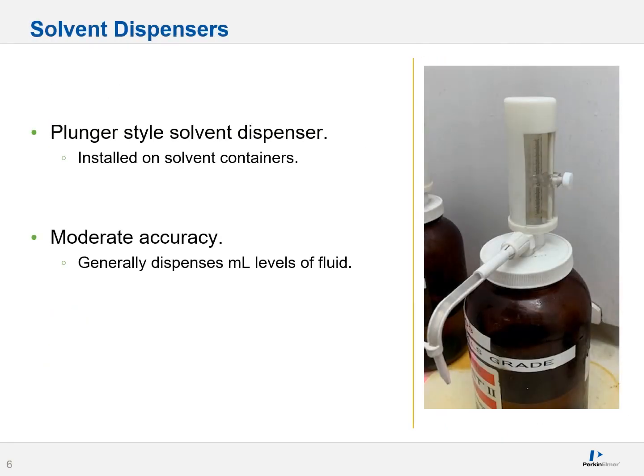Now let's talk about solvent dispensers. There are many different types, but one of the most common is the plunger-style solvent dispenser, where a plunger system has been effectively screwed onto a bottle of solvent. These can be automated or manual and come in many shapes and forms. They tend to be moderately accurate, generally dispensing about milliliter levels of fluid, although they can dispense smaller levels as well.